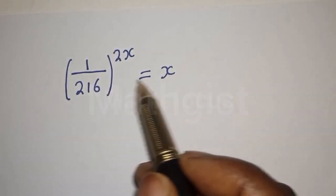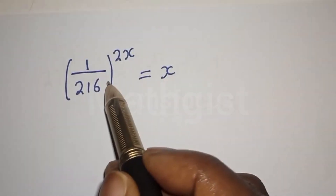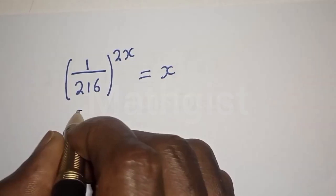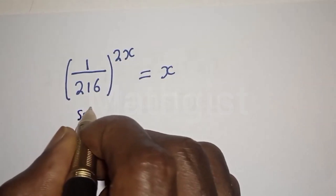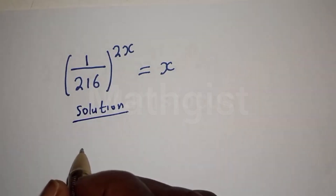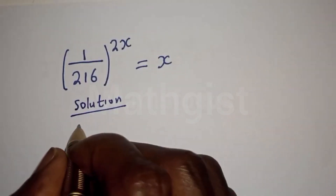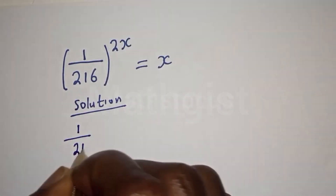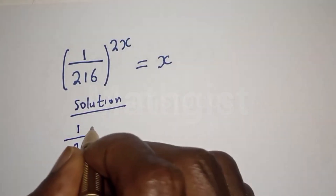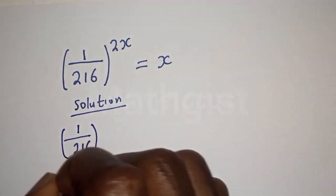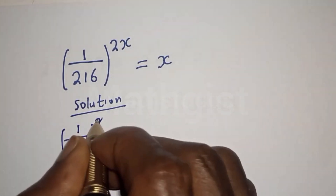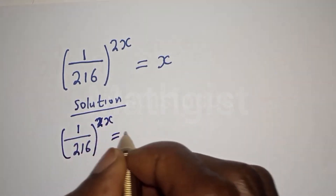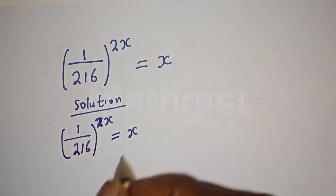We want to find the value of x from this math olympiad question. The equation is: one over 216 raised to the power of 2x is equal to x.